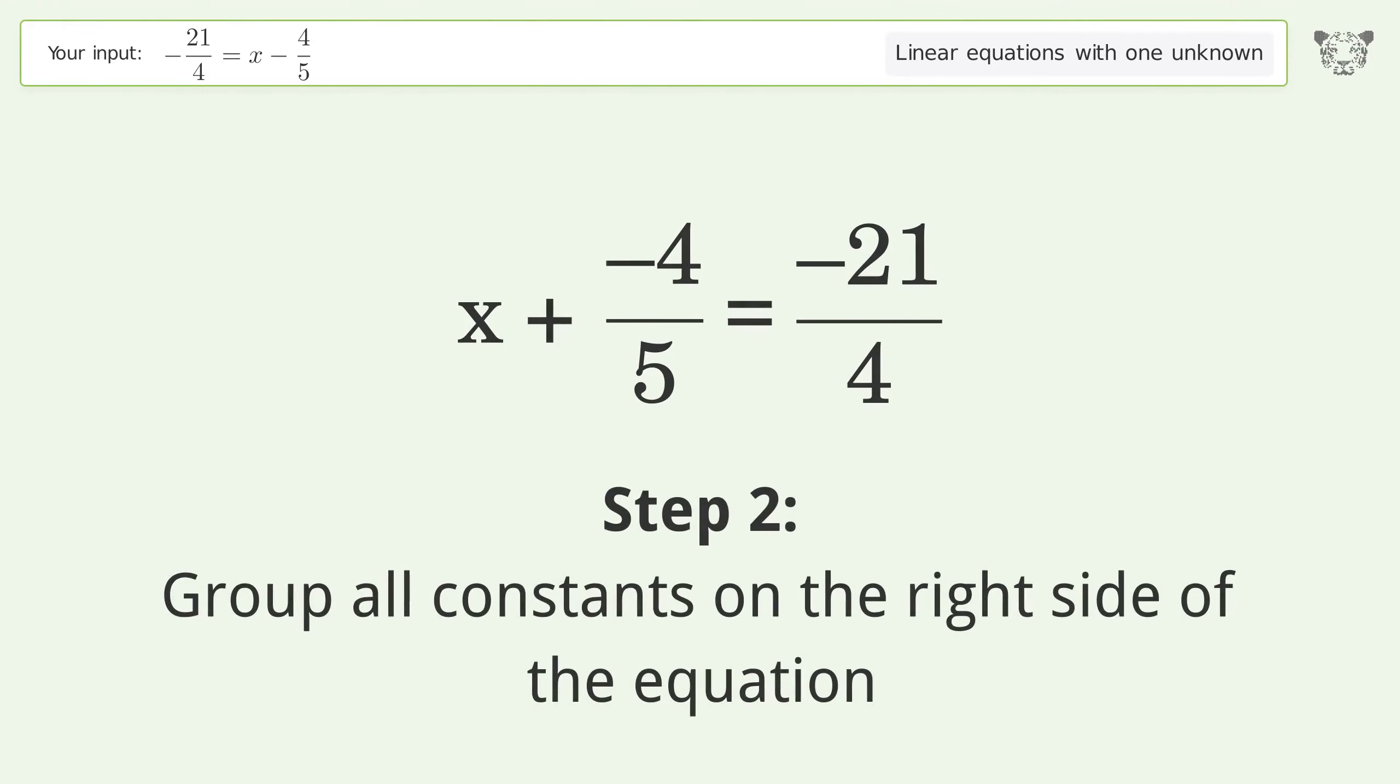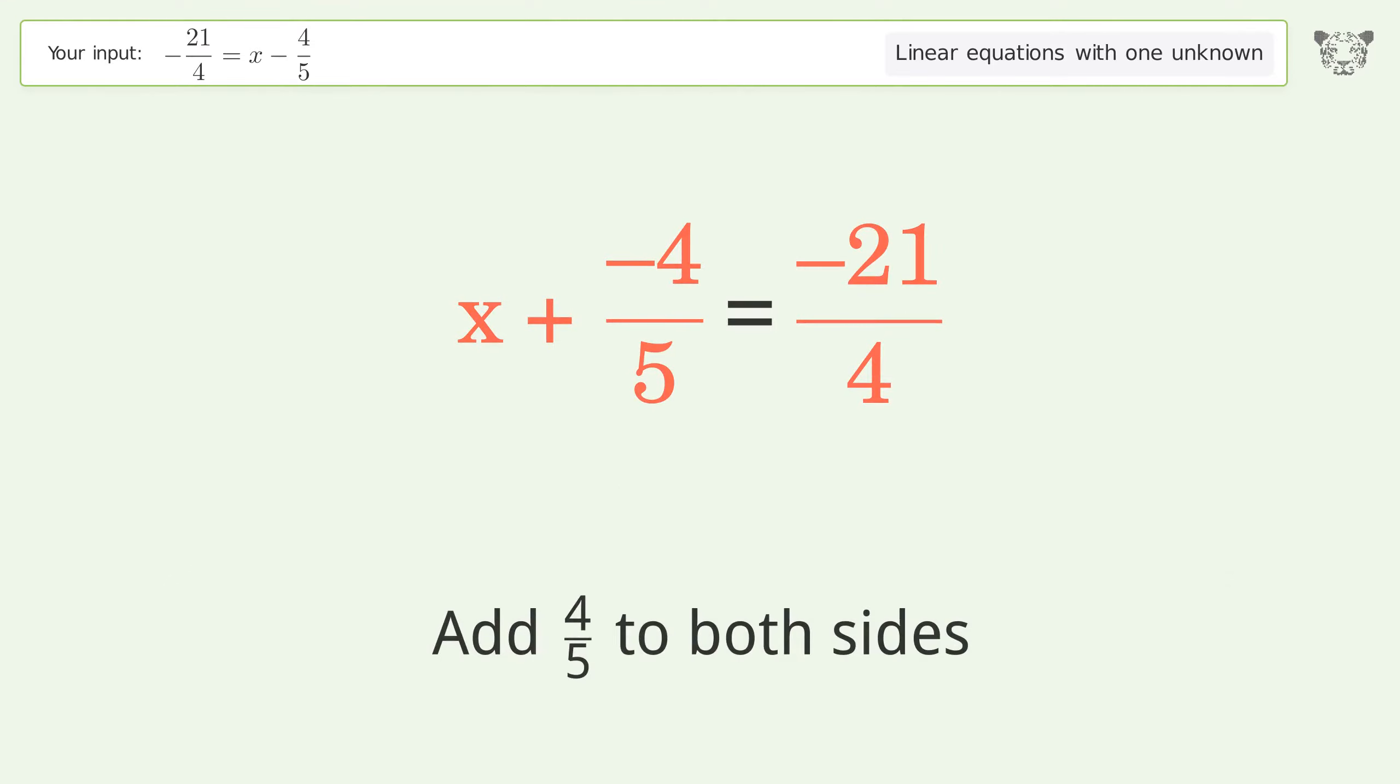Group all constants on the right side of the equation. Add 4 over 5 to both sides.